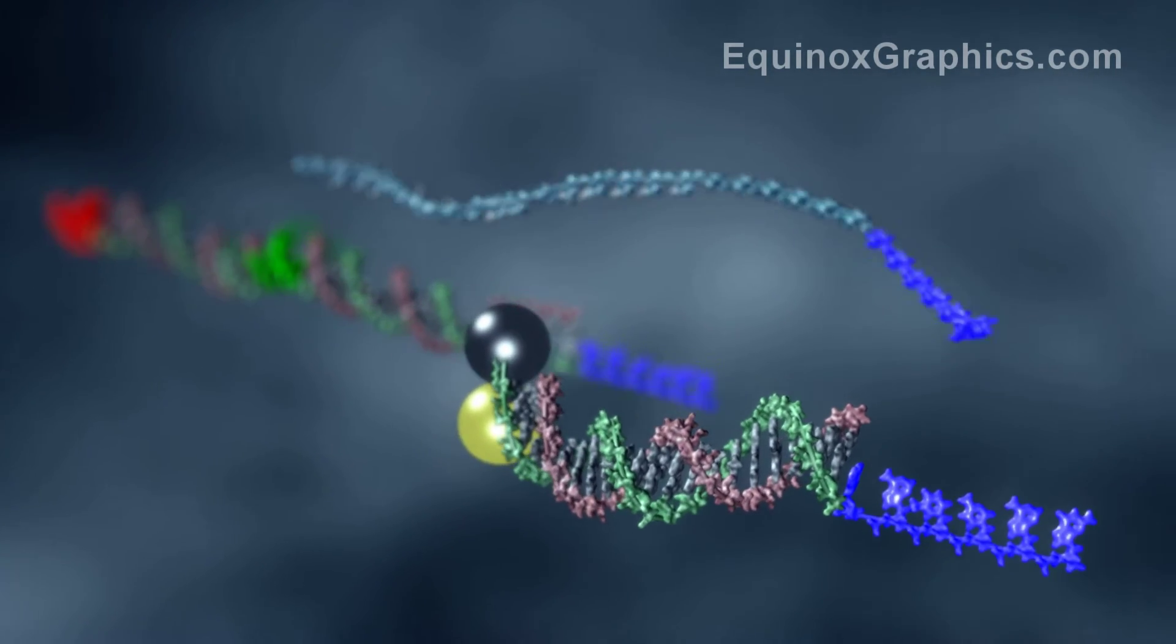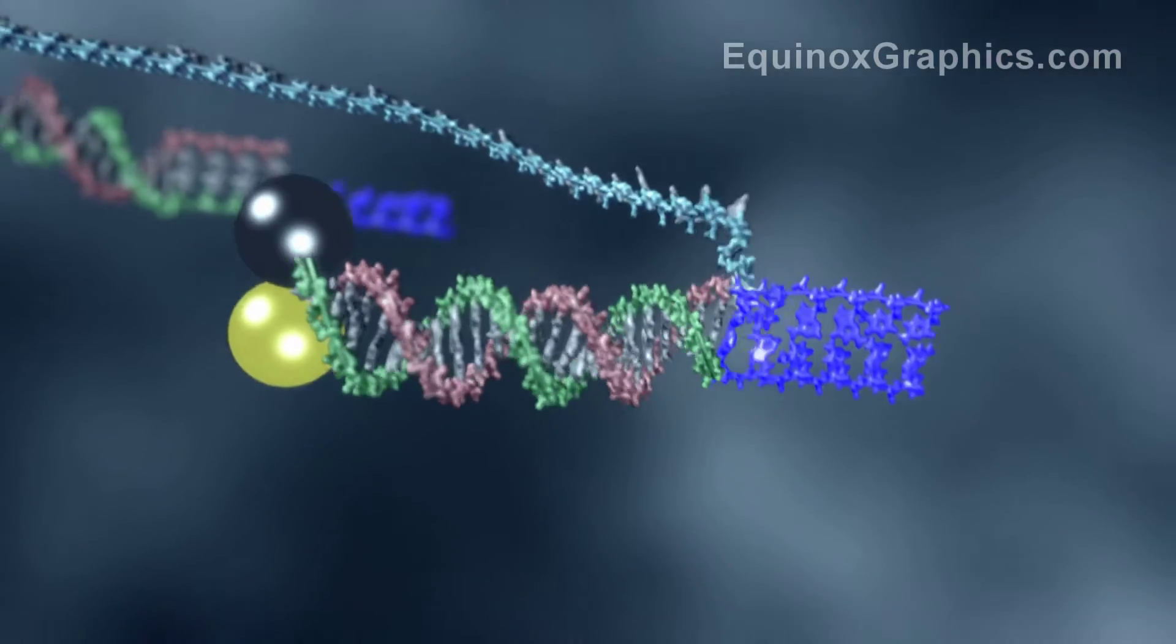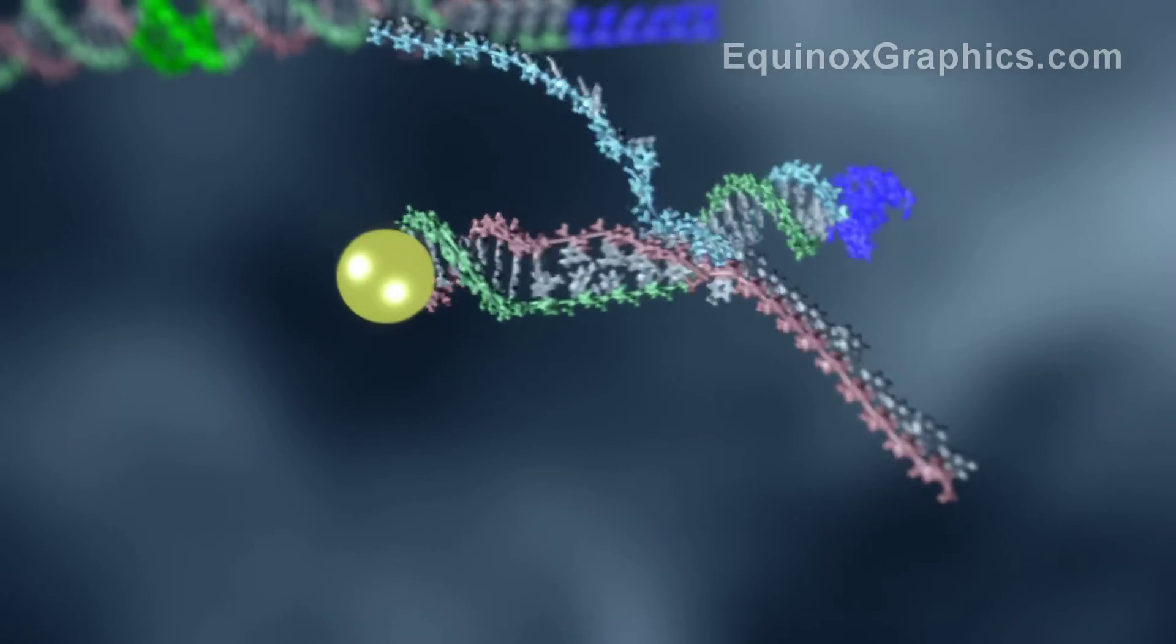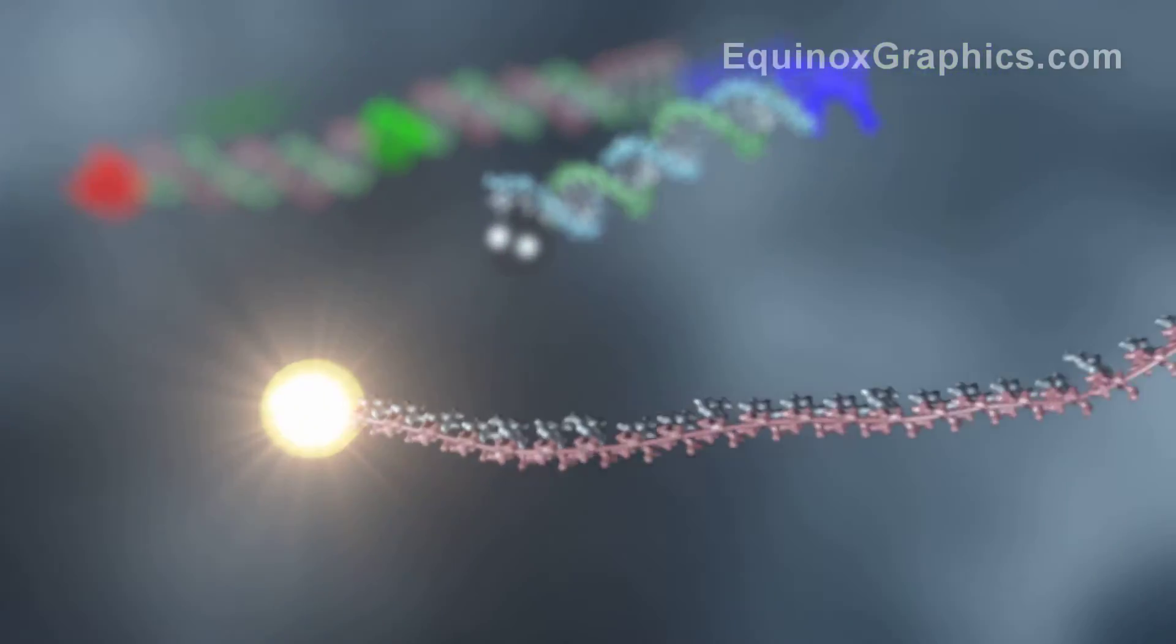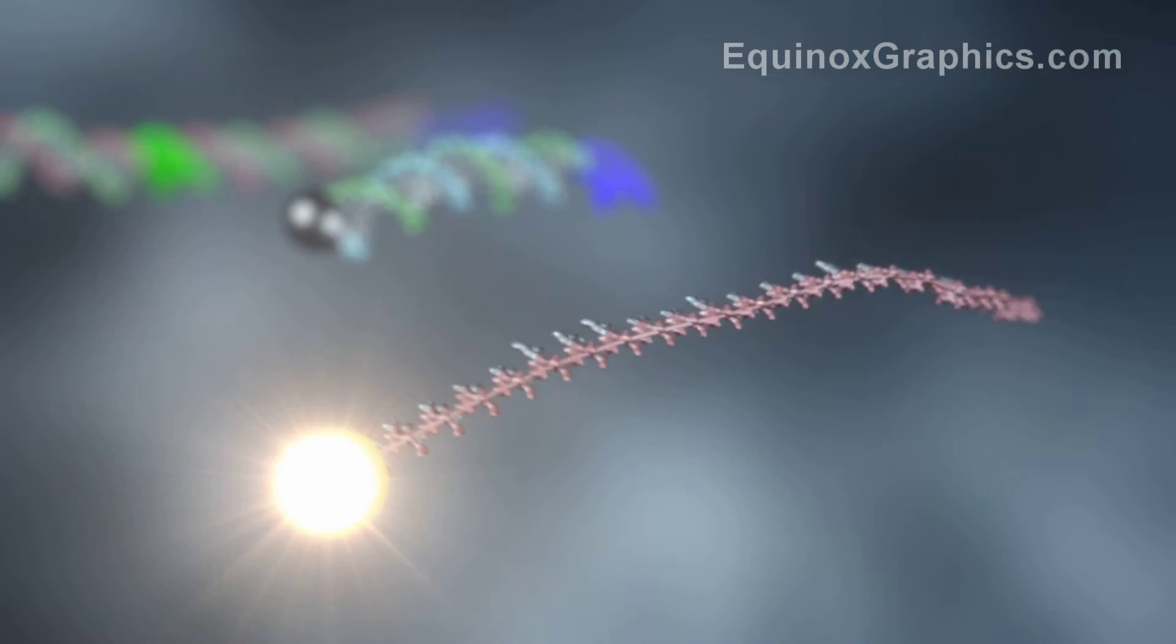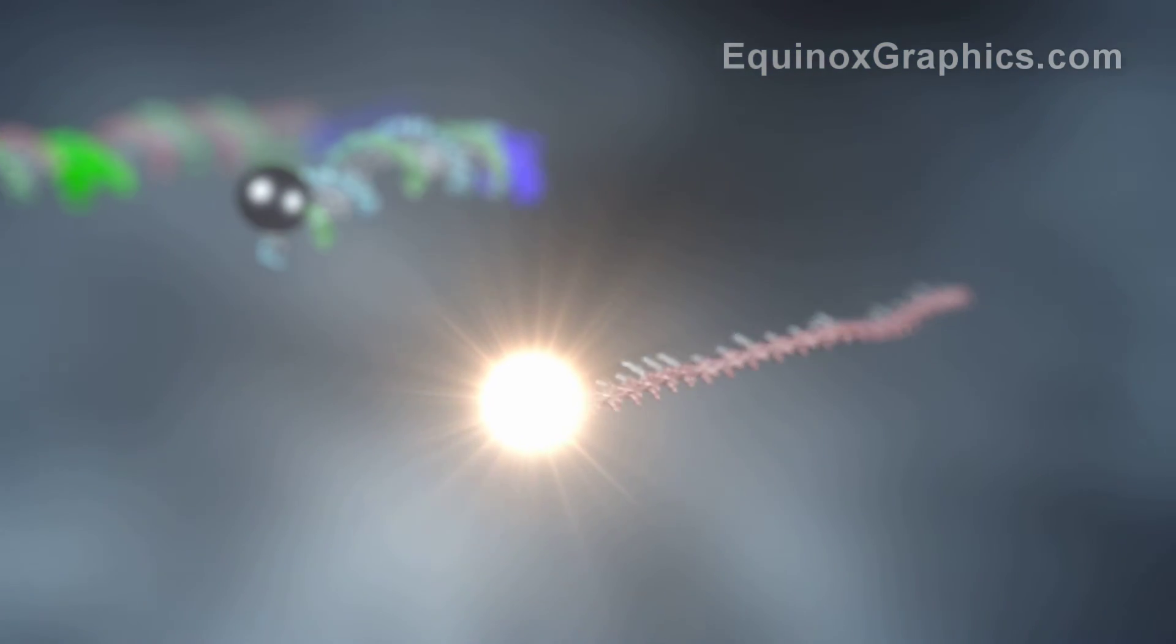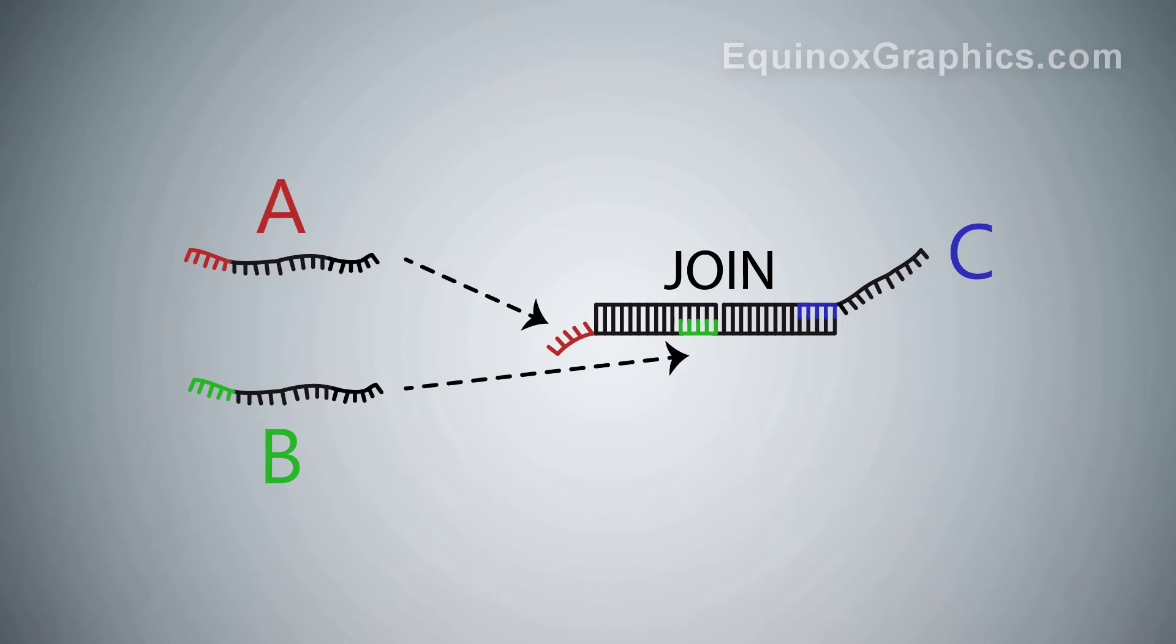The presence of a further strand which binds to the output molecule and contains a fluorescing molecule allows us to track the progress of the reaction. This join gate reaction can be viewed as an abstracted nucleic acid sequence and the dynamics of the reactions can be simulated using the DSD tool.